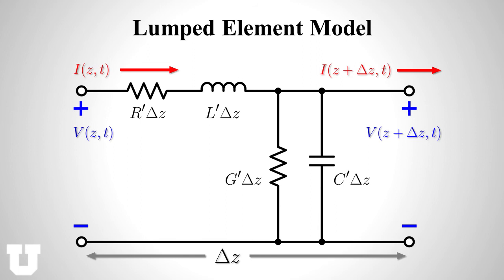And of course the same thing applies to all of the other parameters which we denote with the little prime there. So L prime implies henrys per meter, G prime implies siemens per meter, and C prime will imply farads per meter.